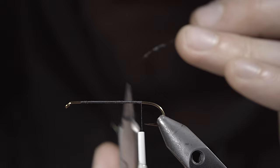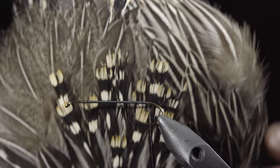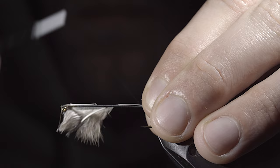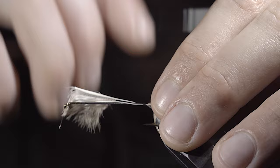Grab a jungle cock cape and select these barred feathers off to the side. Strip away the excess, securing them tightly to the back of the fly. Ensure that you secure them tightly and snip the excess free.